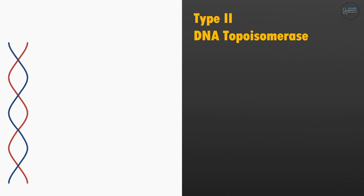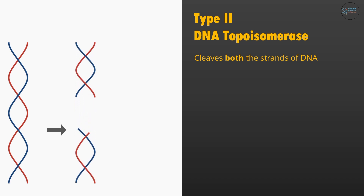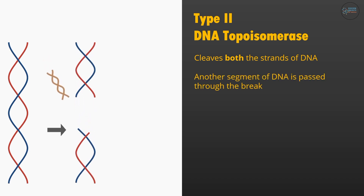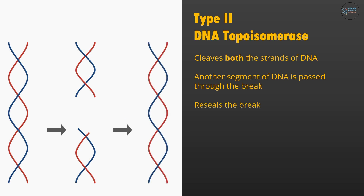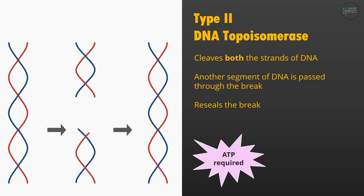Type 2 DNA topoisomerase works differently. It first shows nuclease activity and cuts both DNA strands, after which another segment of DNA passes through the gap, creating negative supercoils which relax the coiled DNA strands. Type 2 DNA topoisomerase then shows ligase activity and reseals the broken strands. This process requires energy in the form of ATP. Examples of Type 2 DNA topoisomerase are DNA gyrase and topoisomerase 4.